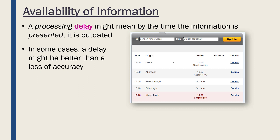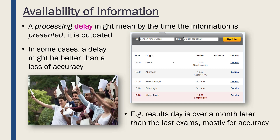However, in some cases having real-time information is not that important — a delay might actually be better than a loss of accuracy. For example, people often complain about how results day, where they get their exam results, is usually at least a month after the last exams. You might sit your exam in May and get your results in August. That delay doesn't have to happen — you could hire 50,000 examiners and mark it the day after — but it's much better to wait and make sure all of the results are accurate. So real-time information is really important in some cases but not so much in others. There is often a trade-off between accuracy and minimising the delay.